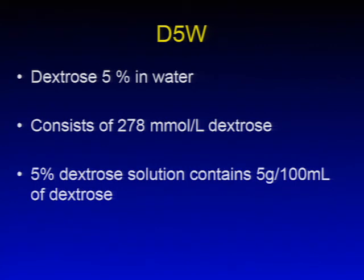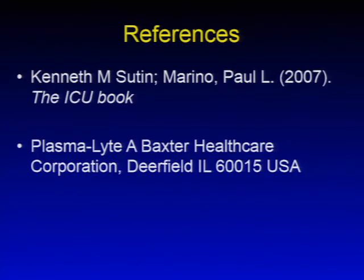D5W, or dextrose 5% in water, consists of 278 millimoles per liter of dextrose. A 5% dextrose solution contains 5 grams per 100 milliliters of dextrose. This concludes the fluid and electrolyte discussion.